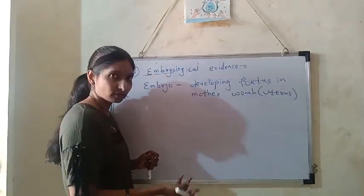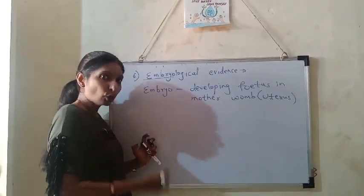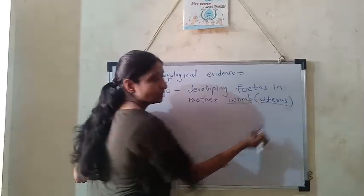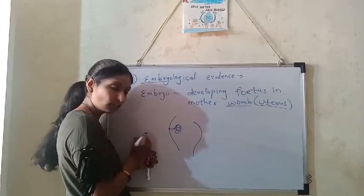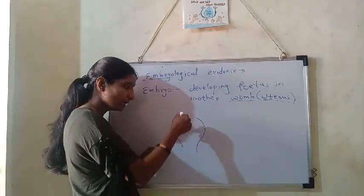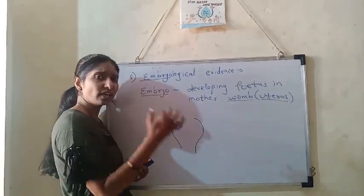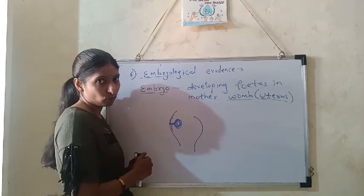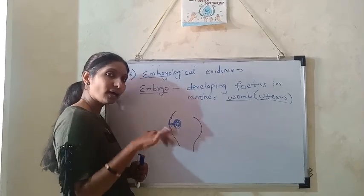The baby inside the mother's body is held in a bag called the uterus. The developing baby inside is called an embryo. The embryo can prove that all living things share a common origin. This is a topic best studied with a textbook diagram, so I will show it directly and explain it to you.